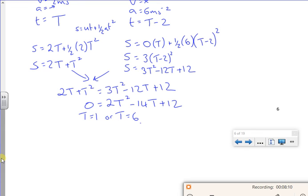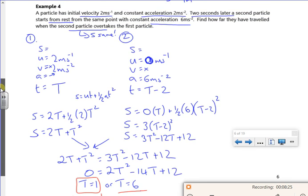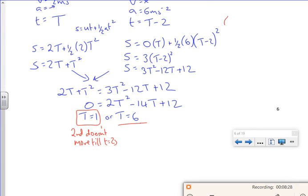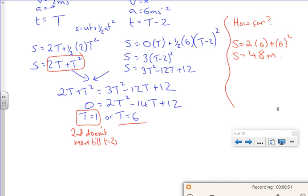It can't possibly be T is 1 because the second one doesn't go until T is 2. So it must be T is 6. Now the question was, how far? So last little bit, how far? So I can choose A or B. It doesn't really matter which one I go for. And I've got these equations here. That looks like an easy equation to do. So I'm going to go with 2 lots of 6 plus 6 squared. So it's going to be 36 plus 12, 48 meters.